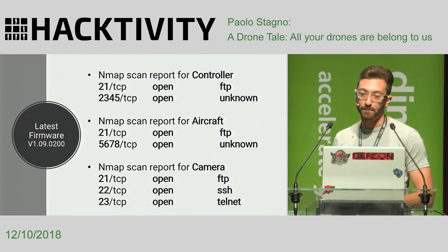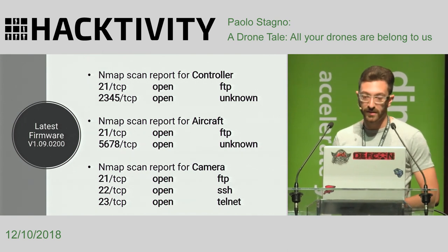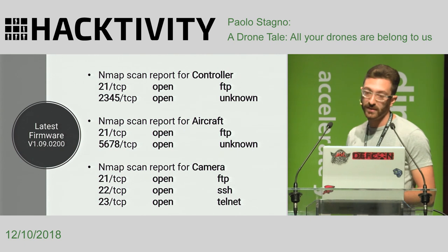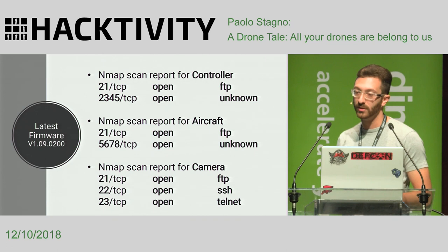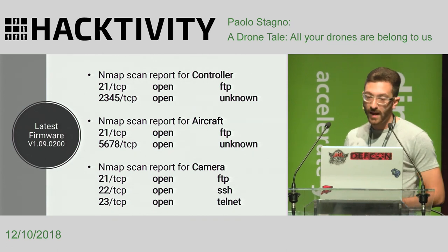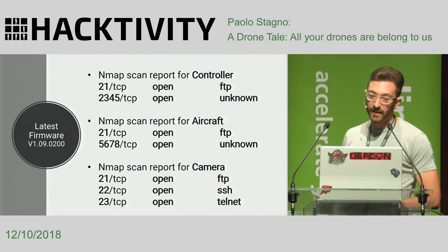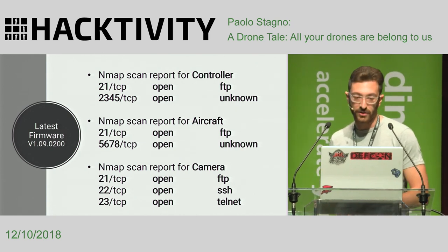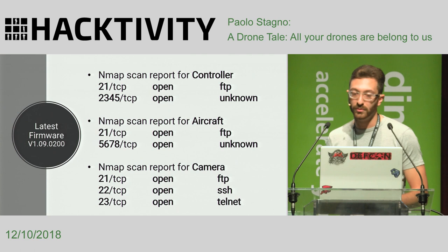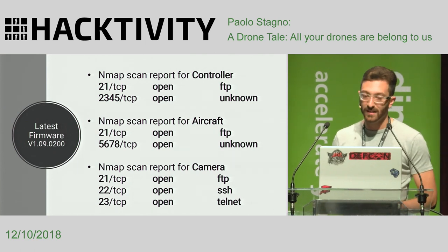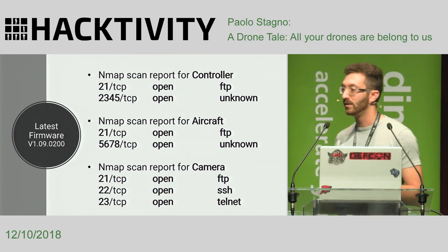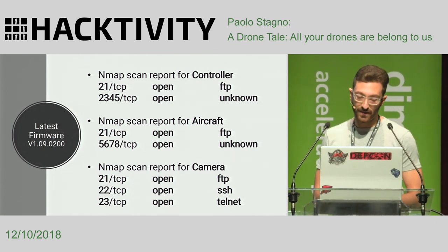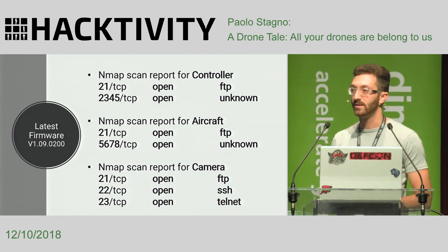They filtered out a lot of unnecessary services and only left the core ones. Specifically, they left FTP because it is also used for uploading new firmware to the drone and retrieving flight logs, along with the port used by the application. This hardening was done to counter an illegal mod market that allowed people to change, for example, the maximum altitude of the drone or remove limitations like the no-fly zone.